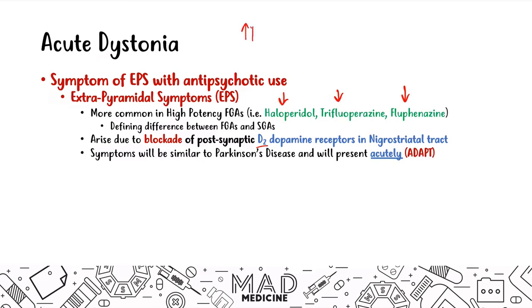When you block D2 receptors, you're going to have high D1 receptor activation, which leads to increased cyclic AMP. Because you have increased cyclic AMP, your body is going to have a negative feedback and tell your brain to stop producing so much dopamine. That's going to lead to low dopamine levels — and keep that in mind, because that's exactly what happens in Parkinson's, where you also have low dopamine levels.